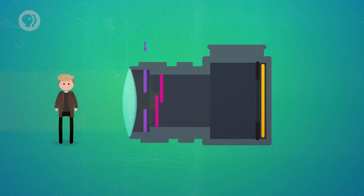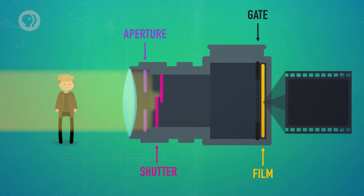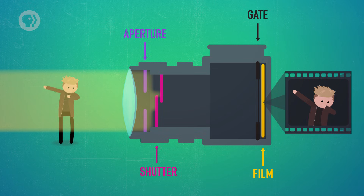To control how long the film or sensor inside is exposed to light, you can adjust the camera's shutter speed. You can think of a typical shutter as a door in the camera that opens and closes really quick. If you have an aperture that can open wider, like an f1.2 lens, you can let more light in and have a faster shutter speed. Usually your shutter speed is about double your frame rate, so if you're shooting 24 frames per second, your shutter speed would be 1/50th of a second.